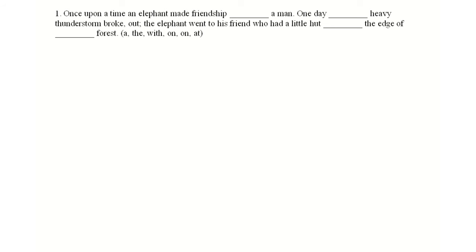If you read the first paragraph, a man, an article already given. A man, an article already given. The elephant made friendship - friendship with a man. From the first paragraph, there is friendship with a man. So one day dash heavy rain, dash heavy thunderstorm broke. A heavy thunderstorm broke out. The elephant went to his friend who had a little hut, edge of the edge. We are using on, on the edge of river, on the edge of the hut. So your right option is preposition on the edge of.